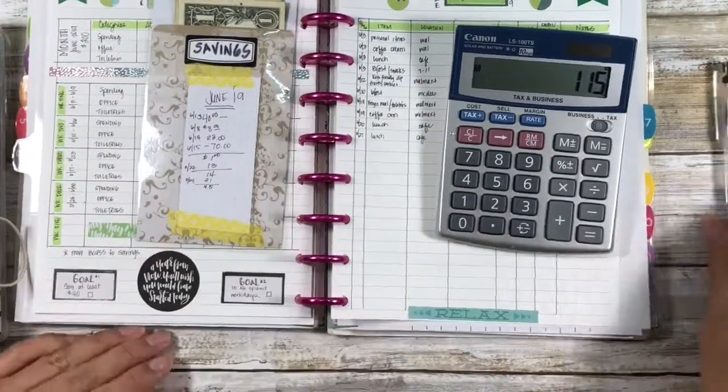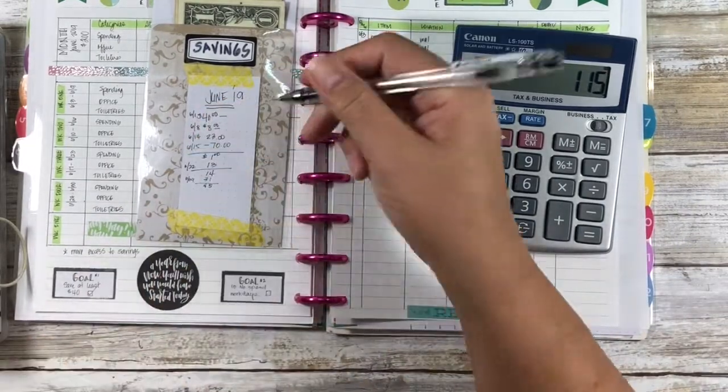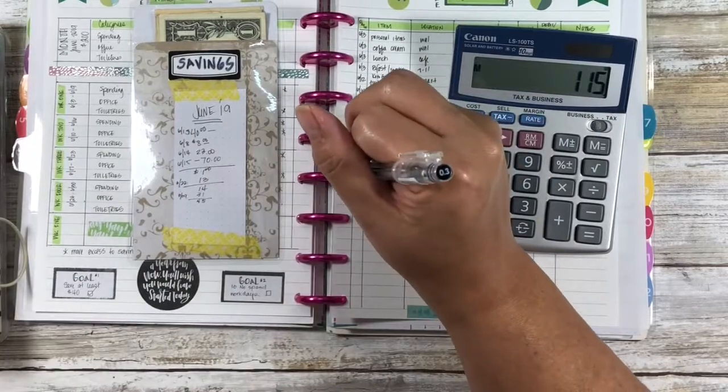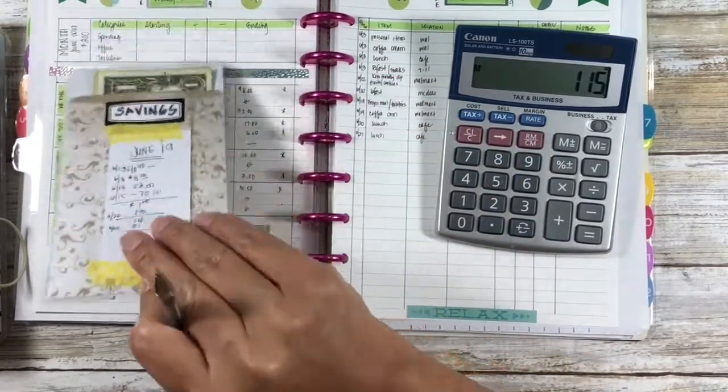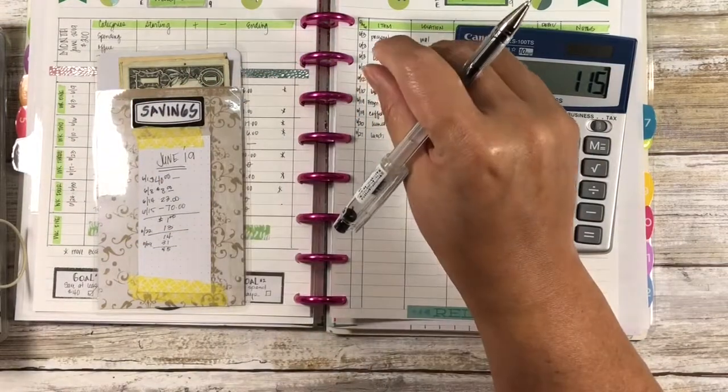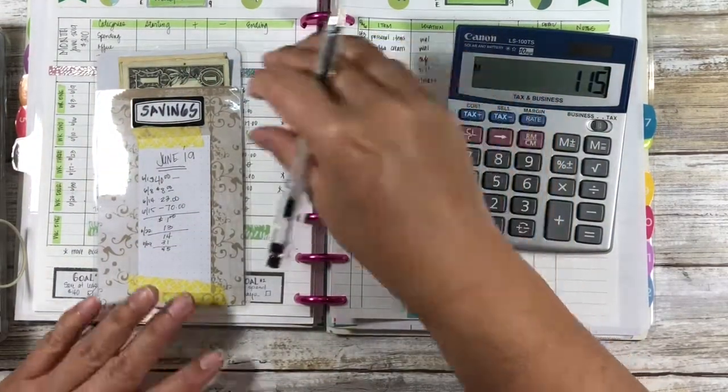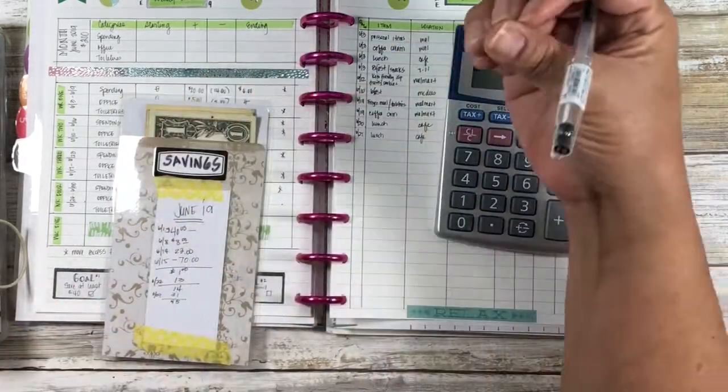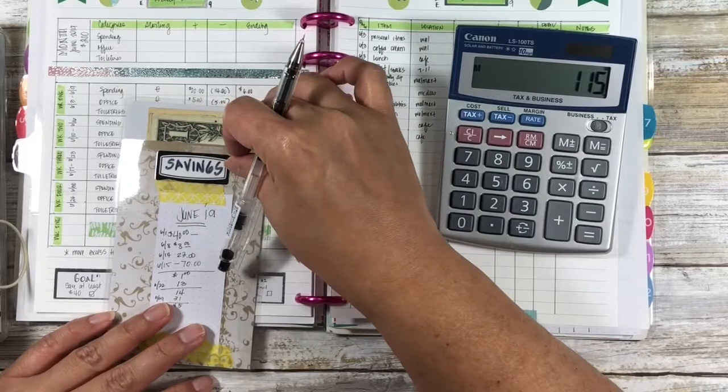But yeah, that's it - yay, we made our goal! Even though we spent what we had saved before, we saved $45 this month. This will stay in here, and then as I get close to my second paycheck in July, I'll either use this towards cash envelopes to take out less, or I will actually put this in the bank and move it over to savings.